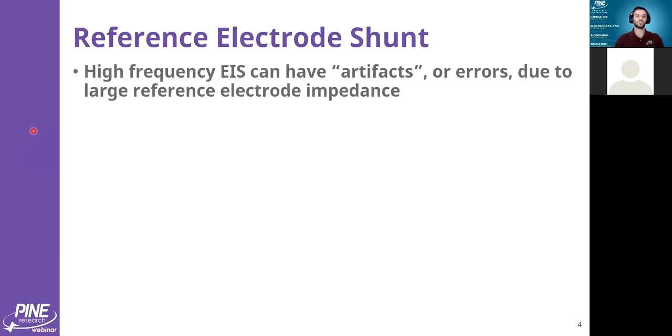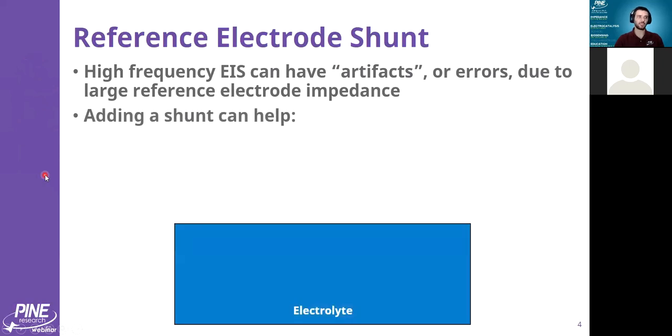What is a reference electrode shunt? It is a tool that is used to augment and improve the impedance data when a reference electrode introduces artifacts or errors because of high impedance. The shunt helps alleviate that problem.